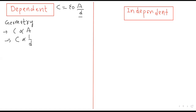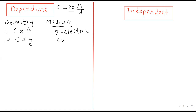Separation بڑھے گی تو capacitance کم ہوگی، area بڑھائیں گے تو capacitance بڑھے گی۔ Dependency میں دوسری چیز medium between plates ہے جسے dielectric constant یا relative permittivity (εᵣ) کہتے ہیں۔ Medium رکھنے سے capacitance پر اثر پڑتا ہے۔